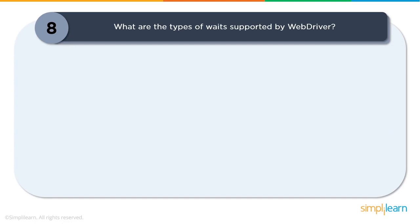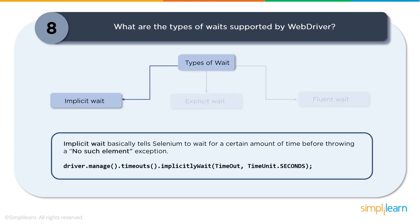Question eight: What are the types of waits supported by WebDriver? Waits play a very important role in executing test cases. Most web applications use Ajax and JavaScript, so elements may load at different time intervals. If an element is not located, Selenium throws an 'element not visible' exception. There are three kinds of waits. First, implicit wait: tells the WebDriver to wait a certain amount of time before throwing a 'no such element' exception. The default is zero.